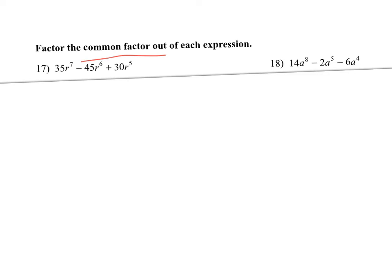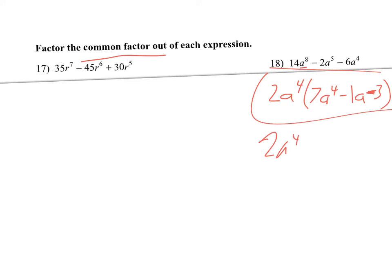Number 18 — they just want the common factor. Is there a number these all divide by? Yes, they all divide by 2. And for the variables, what's the smallest exponent? I'll take 2a to the 4th out. Dividing the numbers gives 7, and subtracting exponents: I had 8 a's and took out 4, leaving a to the 4th. The second term becomes minus a to the 1st (since 2 ÷ 2 = 1, 5 − 4 = 1). The third term is minus 3, and all the a's are taken out there. You can write that middle term without the 1.